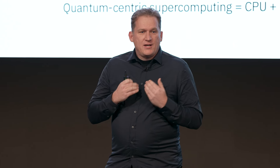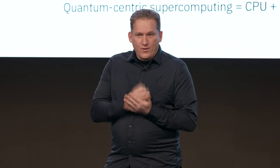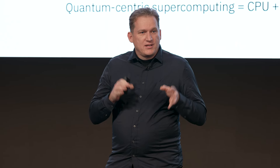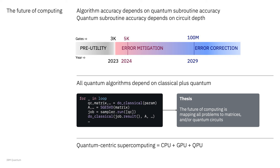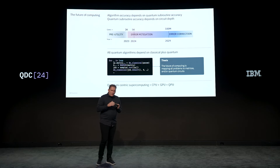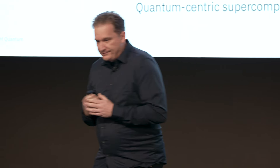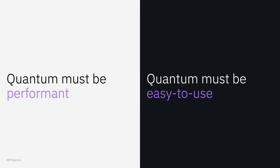Our thesis is that this future of computing is about mapping interesting problems to matrices or tensors and quantum circuits. This architecture we call quantum-centric supercomputing. Our goal at IBM is to enable fast, accurate quantum circuits which can be used as subroutines in this future of computing. For these circuits there are two important numbers: the number of qubits and the number of gates. Our goal over the next few years is to make a continuous path from error mitigation all the way out to error correction.